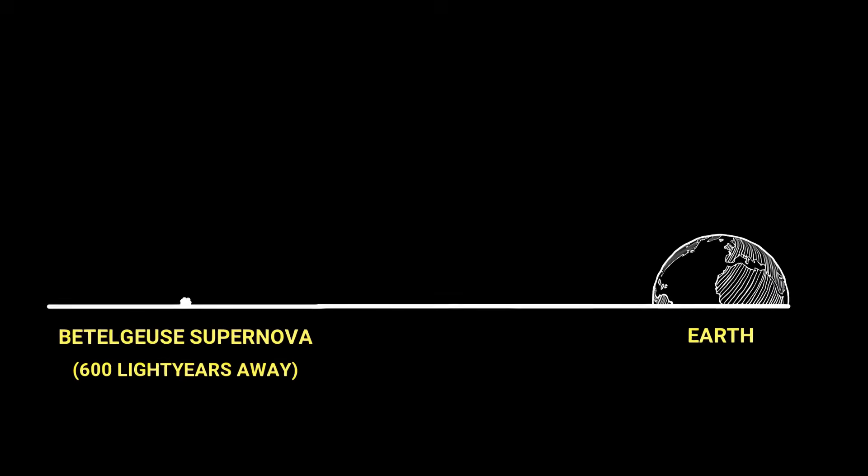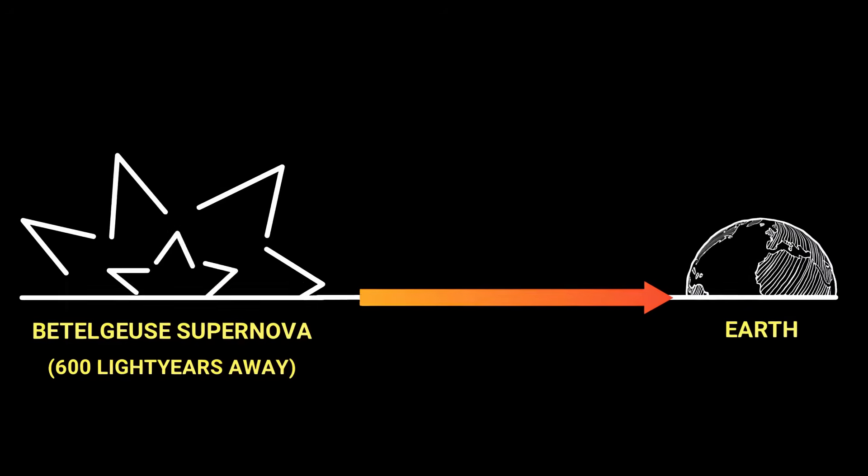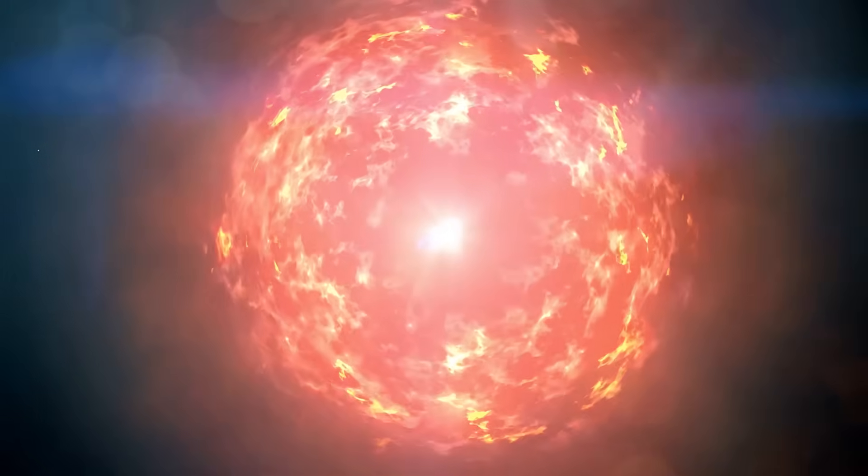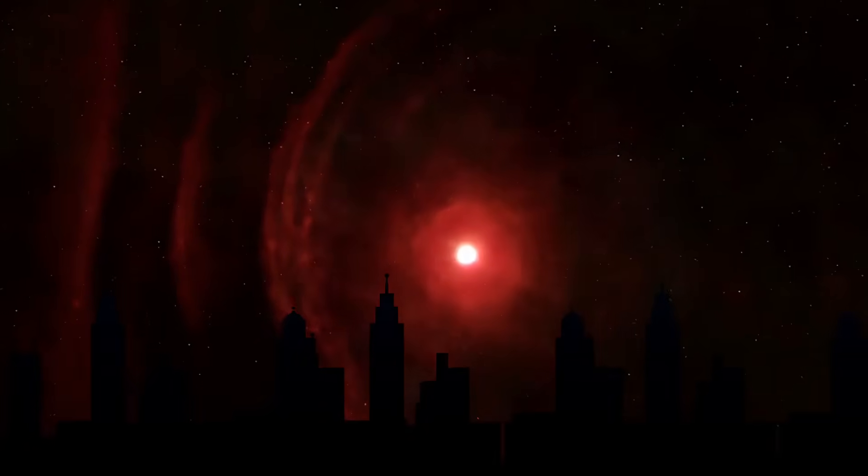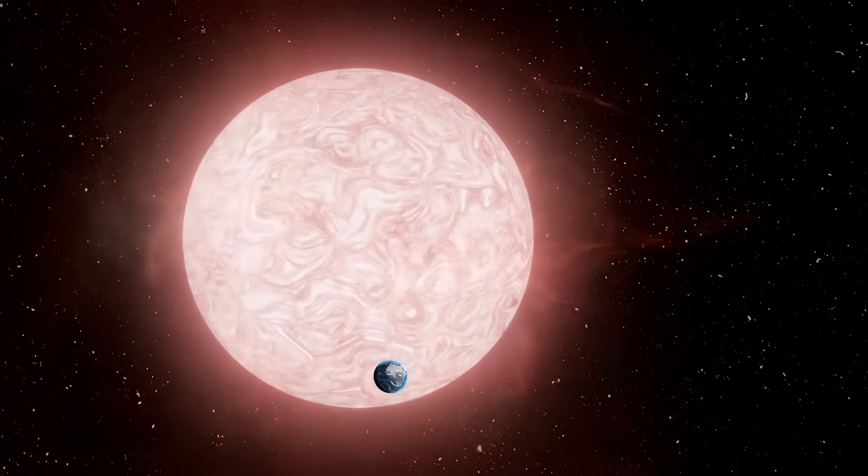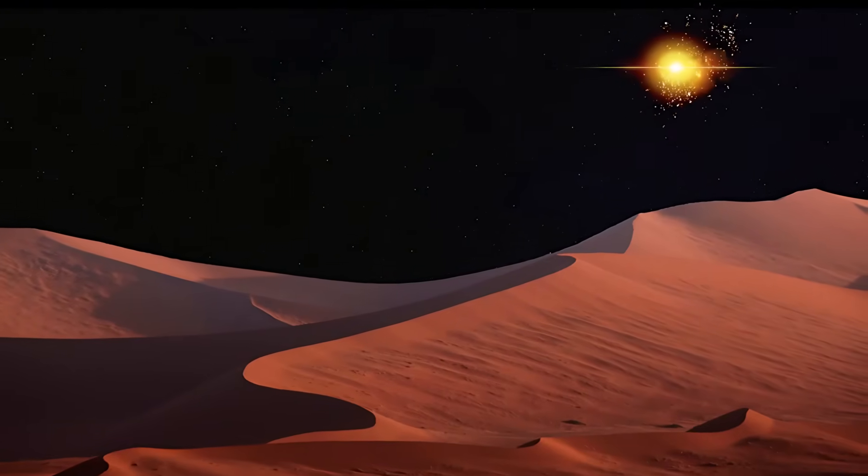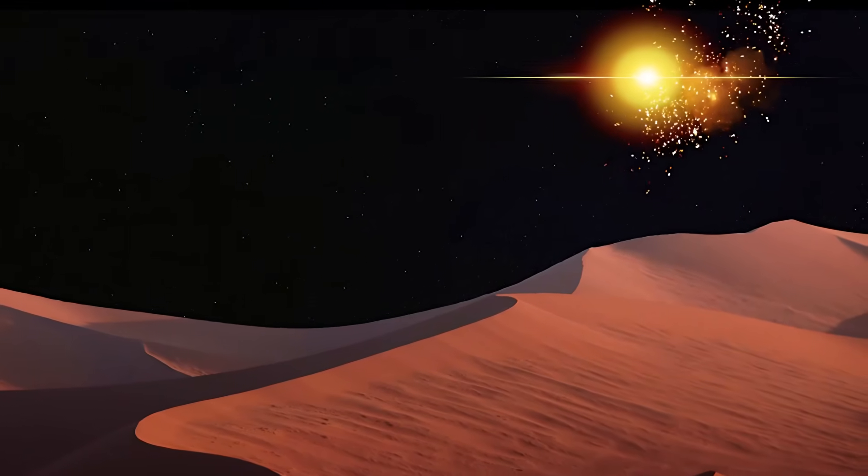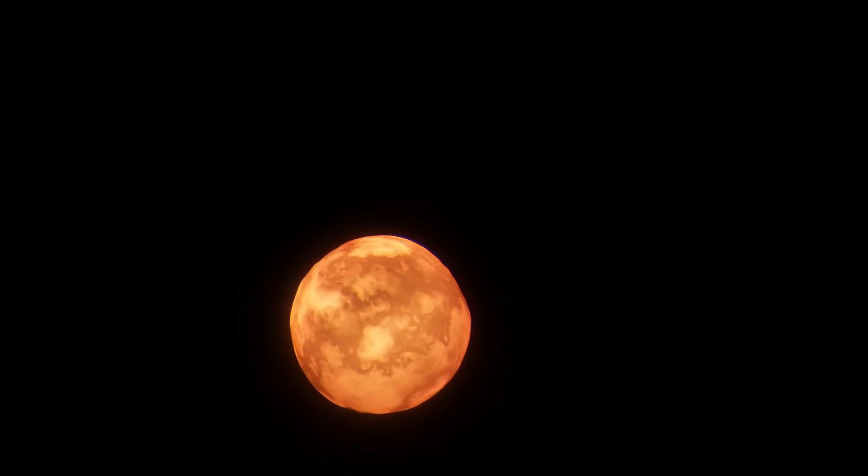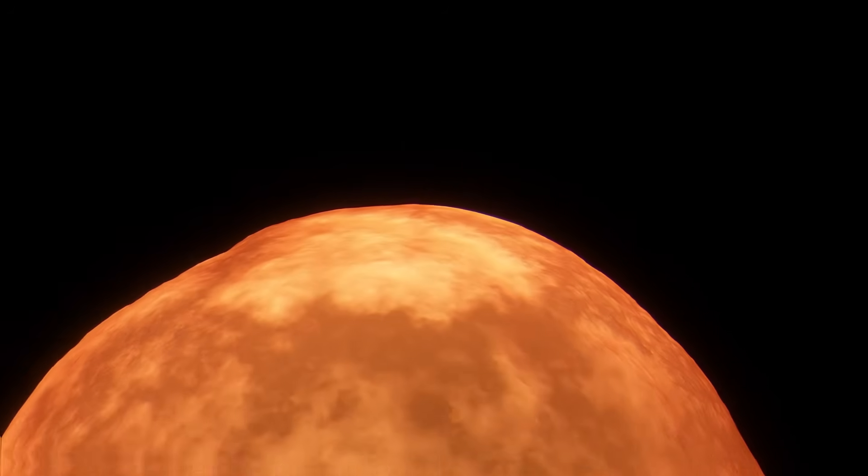If Betelgeuse had already exploded in a supernova within the last 600 years, the light from that explosion would still be traveling towards us. In other words, it's possible that Betelgeuse has already exploded centuries ago, and we could see the explosion at any time, even tomorrow. When Betelgeuse does go supernova, it will be the brightest one ever seen by humans. So just how bright will it be? Will it be visible during the day? Will it pose any danger? And why do recent observations of Betelgeuse challenge our current understanding of stellar physics? Welcome to territory. This is your space.